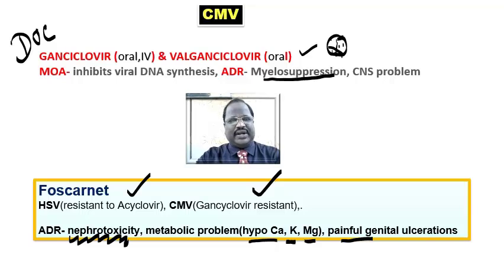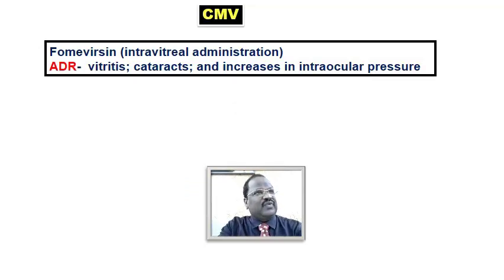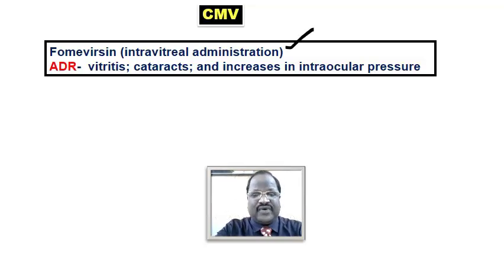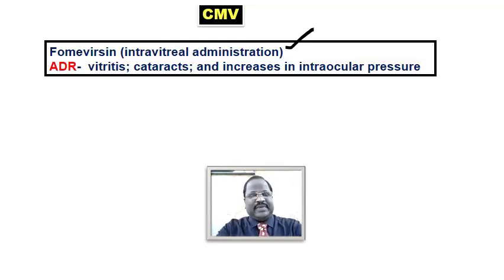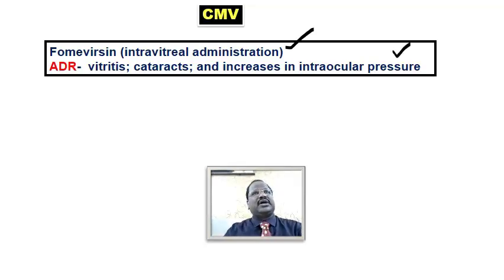For CMV infection we also have fomivirsen, given by the intravitreal route for treatment of CMV-induced retinitis. When given intravitreally it may cause vitreitis, cataract, and sometimes increased intraocular pressure. These are the local problems that can occur with fomivirsen.